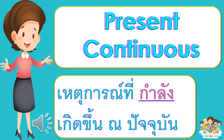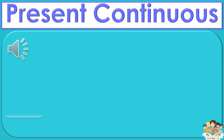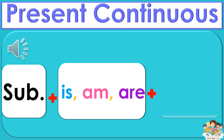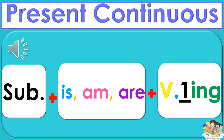Present Continuous คือเหตุการณ์ที่กำลังเกิดขึ้นในปัจจุบัน ยกตัวอย่างเช่น ฉันกำลังไปโรงเรียนตอนนี้ — I am going to school now. สูตรของ Present Continuous คือ Subject + is/am/are + Verb ช่องที่หนึ่ง + ing